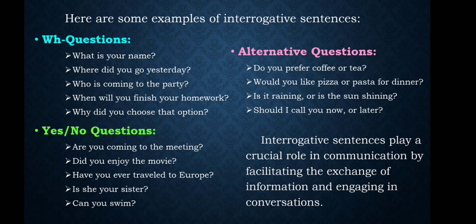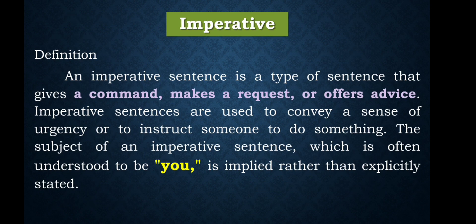Interrogative sentences play a crucial role in communication by facilitating the exchange of information and engaging in conversations. The third type is the imperative sentence. An imperative sentence is a type of sentence that gives a command, makes a request, or offers advice. Imperative sentences are used to convey a sense of urgency or to instruct someone to do something. The subject, which is often understood to be 'you,' is implied rather than explicitly stated.